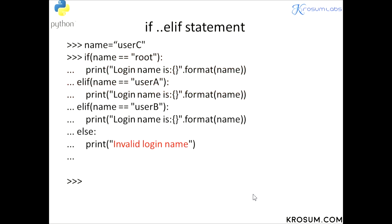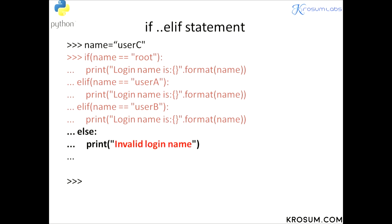If all given conditions fail — for example, name is 'user_c' — first condition fails, second condition fails, third condition fails. Automatically, control goes to the else block, and else returns 'invalid login name'. Else is optional; even if you don't write else, it's fine.